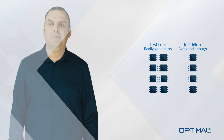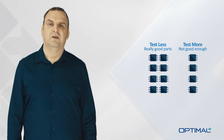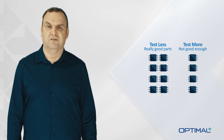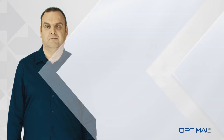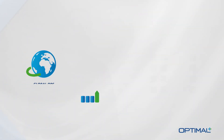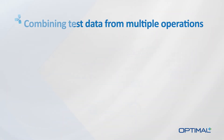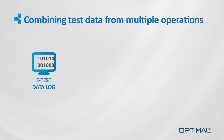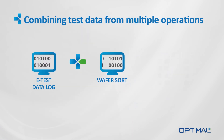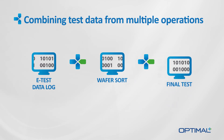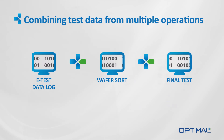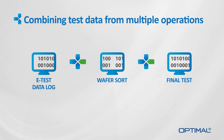These capabilities can be fully automated using our unique rule engines and run 24-7. Consider the possibilities: using a combination of our solutions powered by Xact, you can take e-test data from the foundry, combine it with wafer sort data from one test house, and make the results available to an outlier detection algorithm running at a second test house during final test.